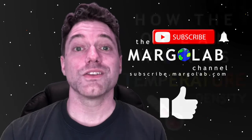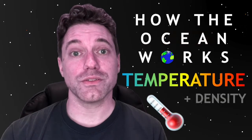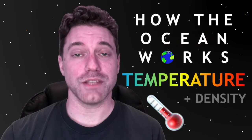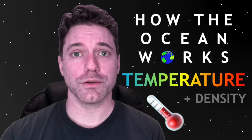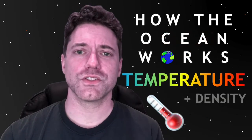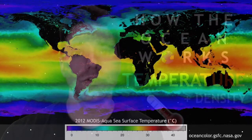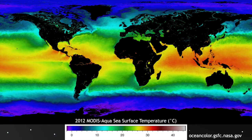Alright, so now let's talk about temperature and the density of water. To start, here is a map of sea surface temperature measured by satellite, and as you'd expect, the surface of the ocean is warmer near the equator and colder near the poles.